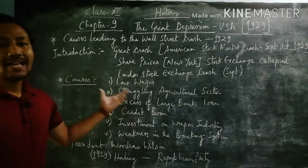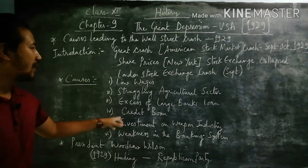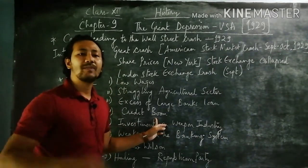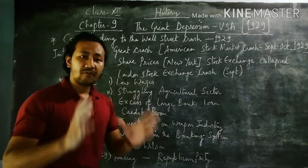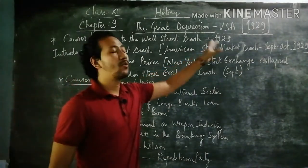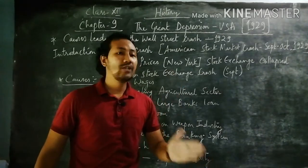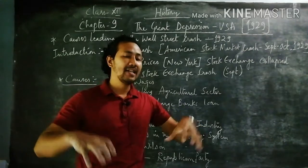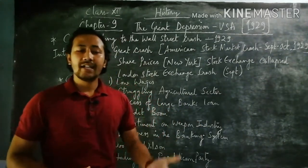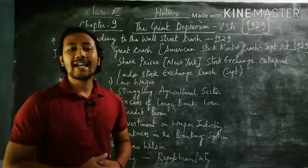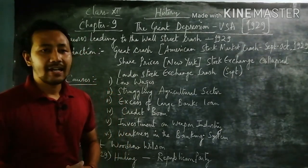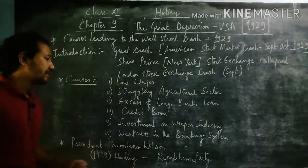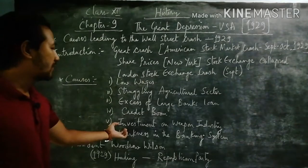Next we talk about the credit boom — the same topic related to all those kinds of credit taken by America from respective friendly nations. This is the year 1929, and if you remember, 1914 to 1918 was the First World War between the Triple Alliance and Triple Entente. The Triple Entente were able to get victory over Germany, and Germany was made to sign the Treaty of Versailles in 1919. The League of Nations was formed in 1920, and nine years later this Great Depression took place.